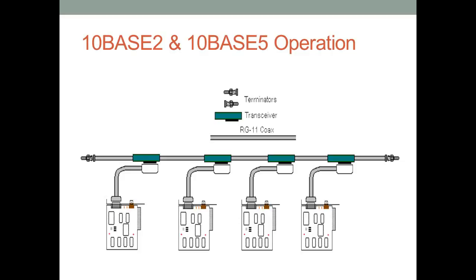This diagram illustrates 10Base2 and 10Base5. A coaxial cable wire ran between network cards — not to a central device, but from one computer to the next, snaking through a building. The maximum length depended on the type of coax cable, essentially its thickness. There were 50-ohm terminators on the ends that fed current back into the center of the coax to avoid grounding problems.